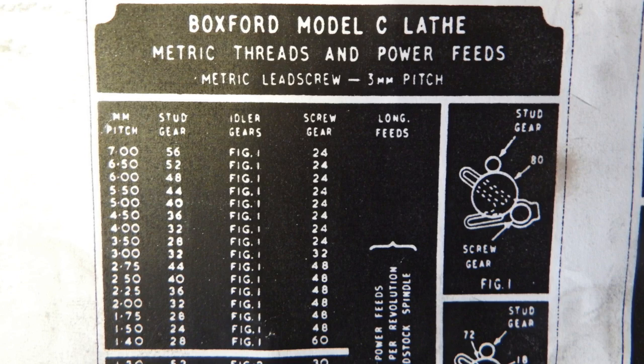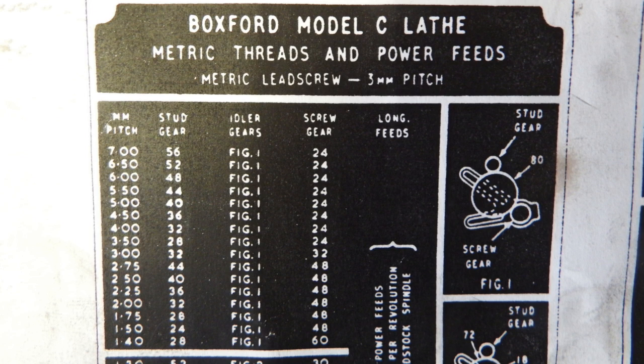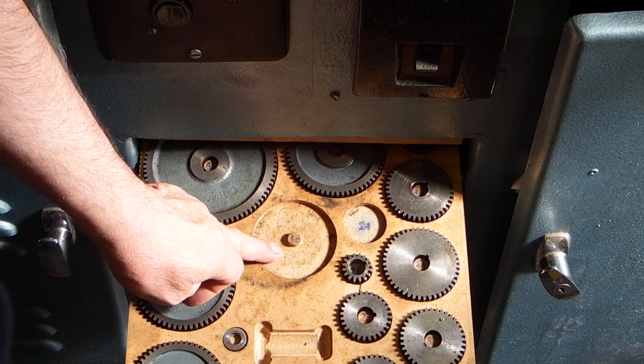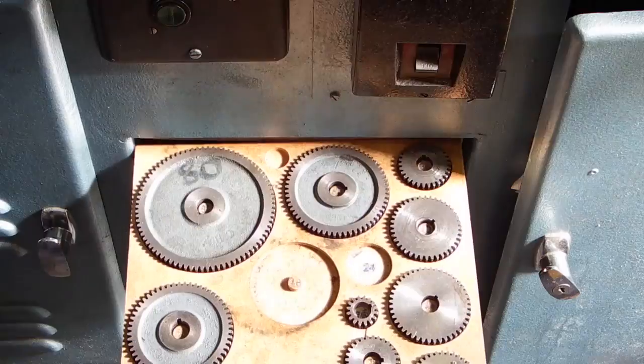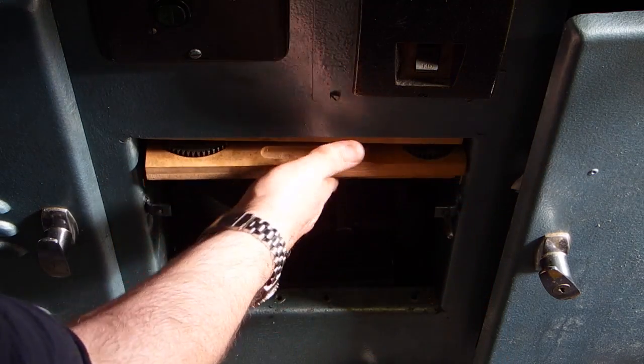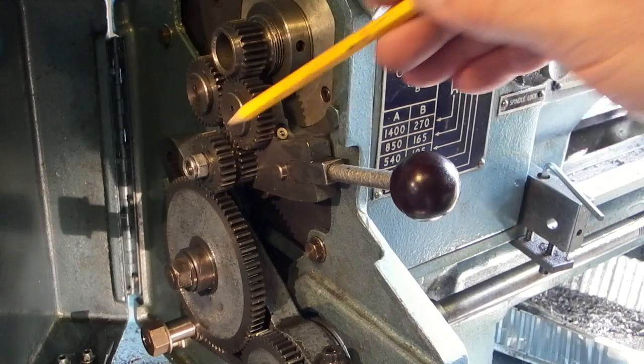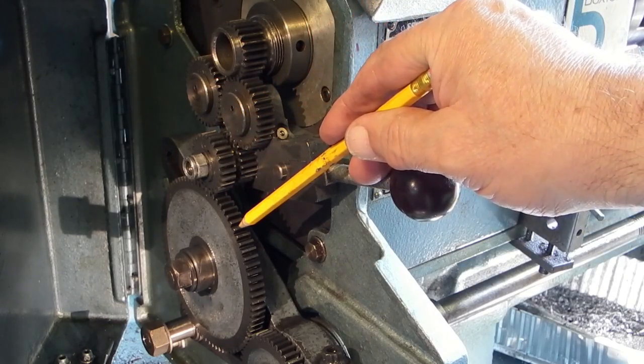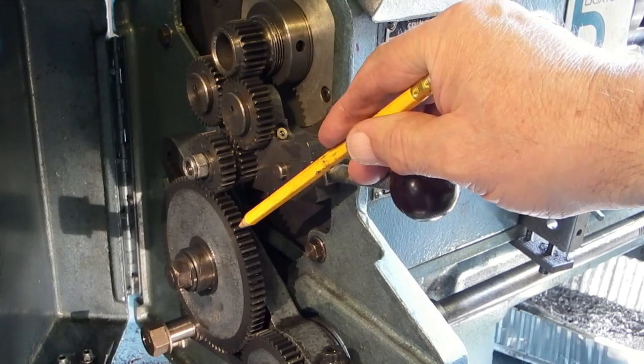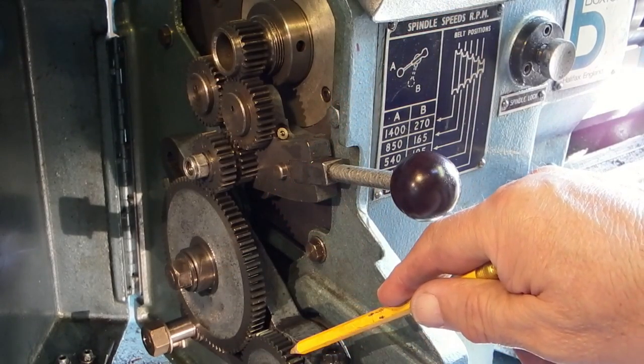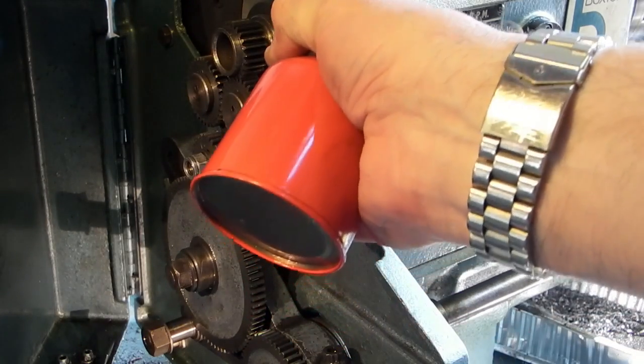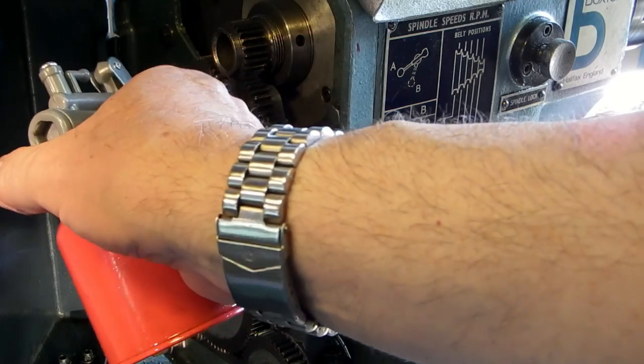Now we want to cut a 1.5 millimeter pitch thread. For a 1.5 millimeter pitch, we need a 48 gear, a 24 gear, and an 80 gear. I've fitted the gears, so you've got the 24-tooth gear on the stud, an 80-tooth gear on the idler, and a 48-tooth gear on the lead screw. I'll oil through the hole.